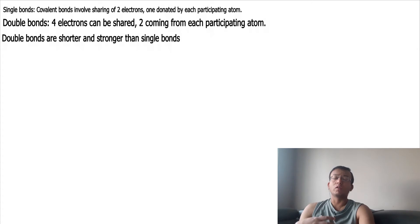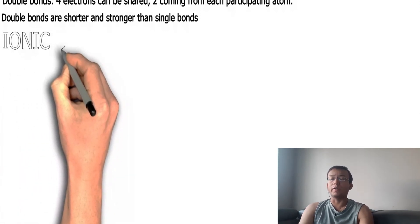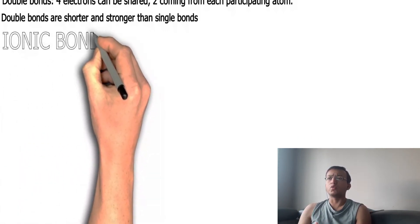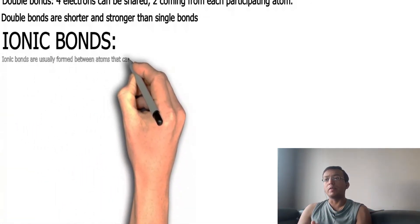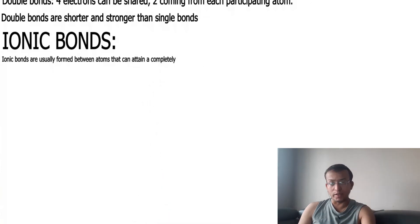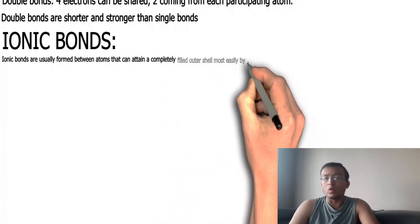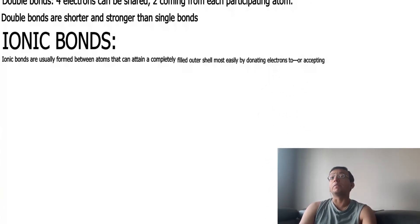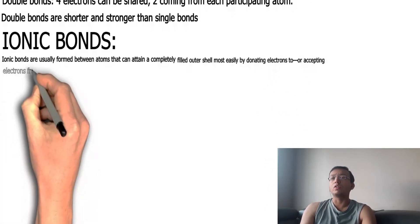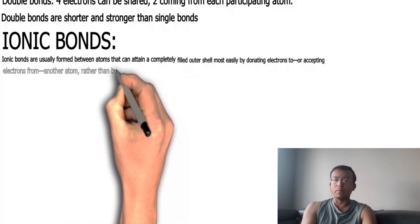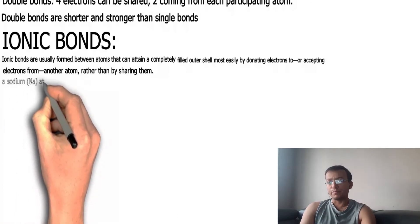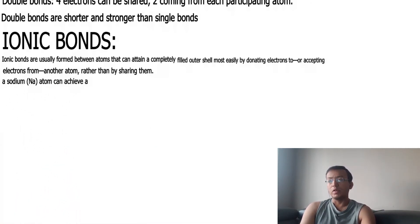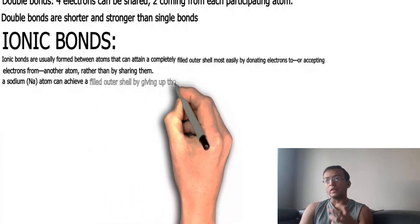There is another type of bond called the ionic bond. Ionic bonds are usually formed between atoms that can attain a completely filled outer shell most easily by donating or accepting an electron from another atom, rather than by sharing. In covalent bonds, electrons are shared, but in ionic bonds, electrons are donated and not shared.